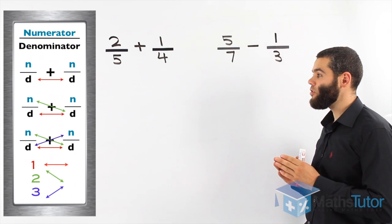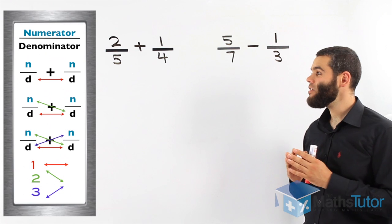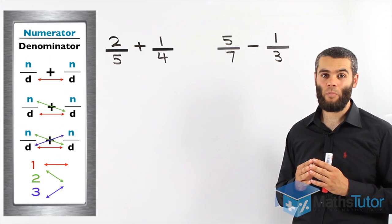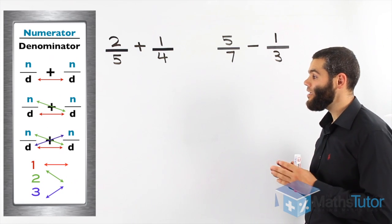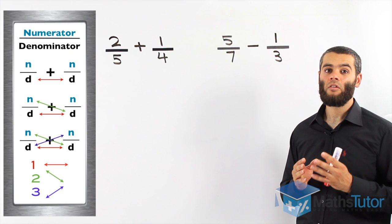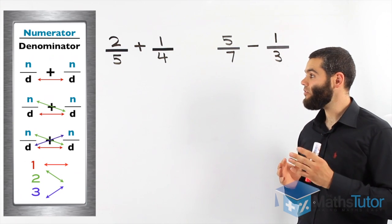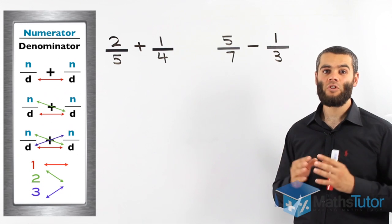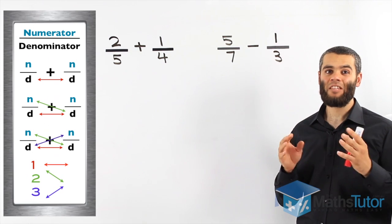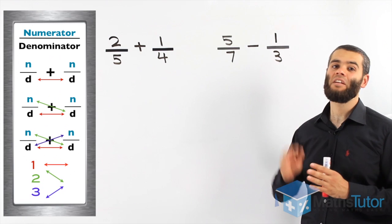Then, we multiply the second numerator with the first denominator as you can see with the purple arrow there. So first, we multiply the denominators together. Then, we multiply the first numerator with the second denominator. And lastly, we multiply the second numerator with the first denominator. What are we trying to do? We are actually making the denominators the same. That's what this process does.